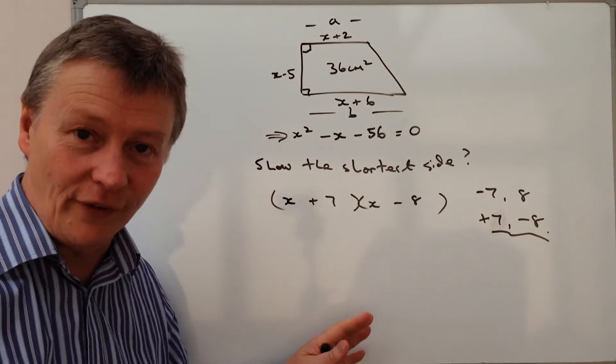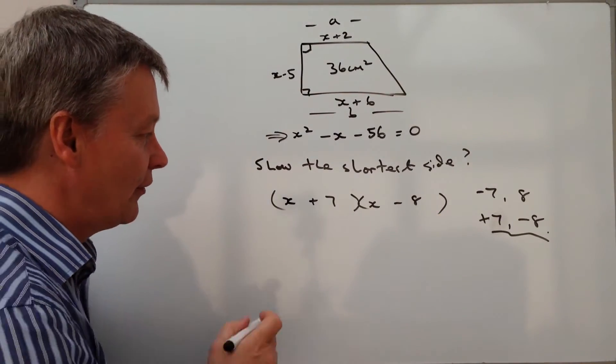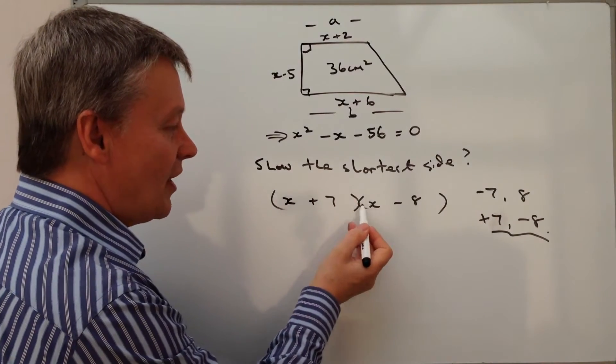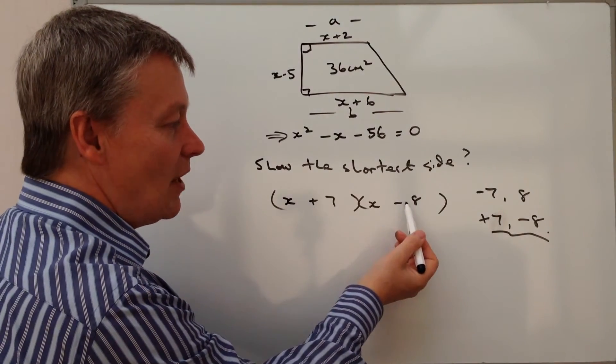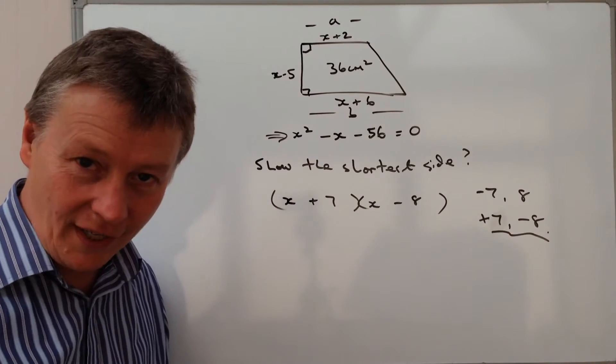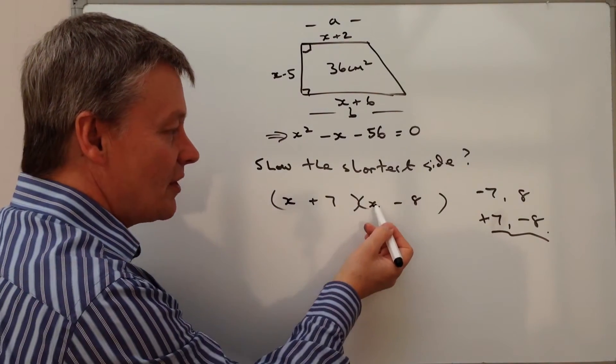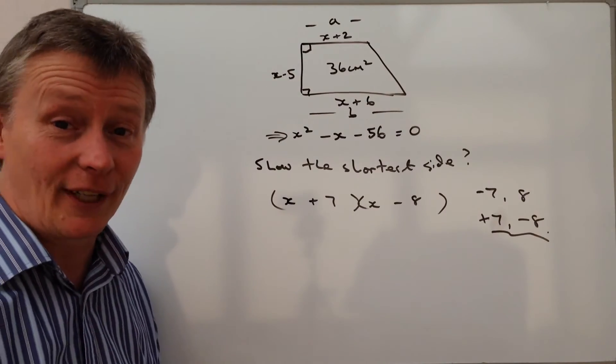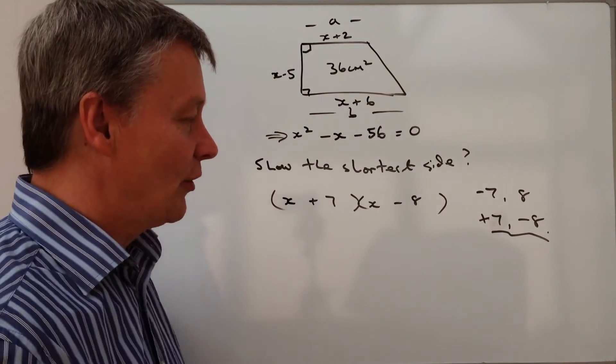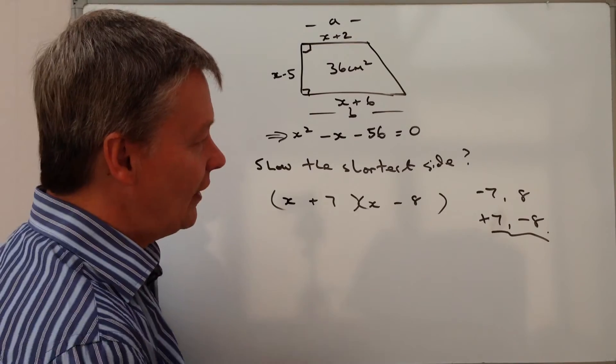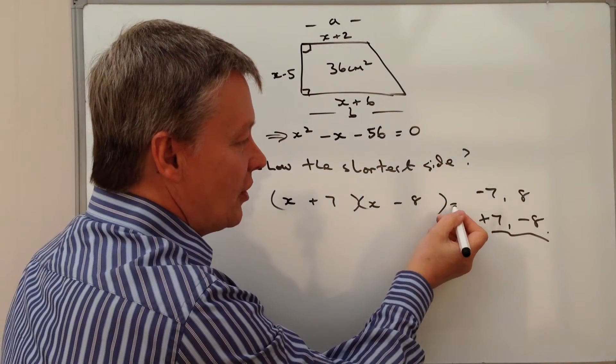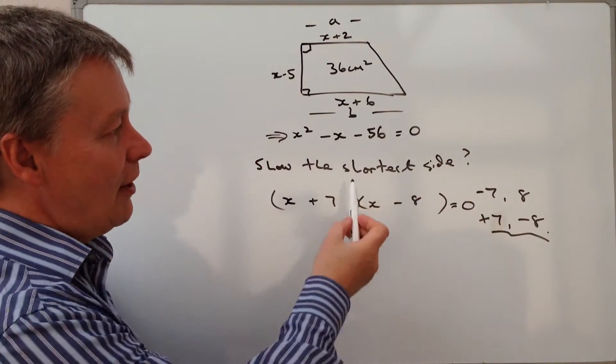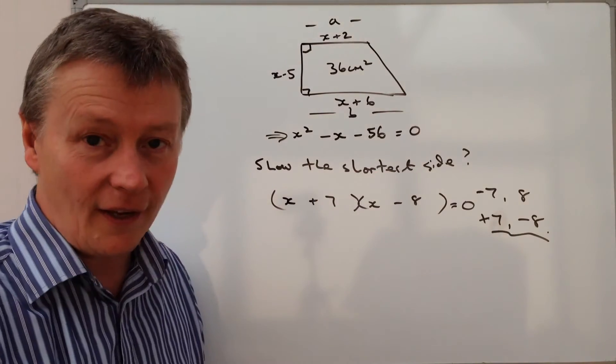And just to prove it, I'm just going to very quickly prove it. I've got x times x is x squared, x times minus 8 is minus 8x, plus 7x and then minus 56. So that works perfectly well for me. And I'm fairly sure that's correct. I'm also fairly sure that these two multiplied together equals 0 because it tells us there.